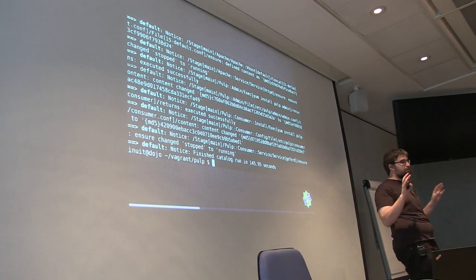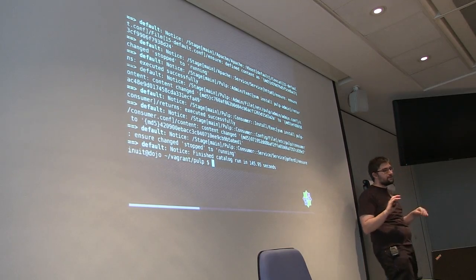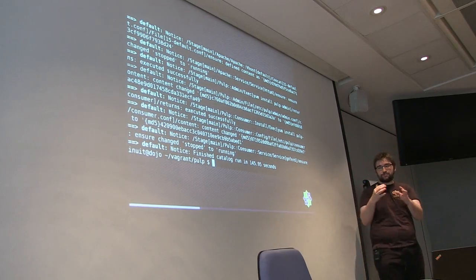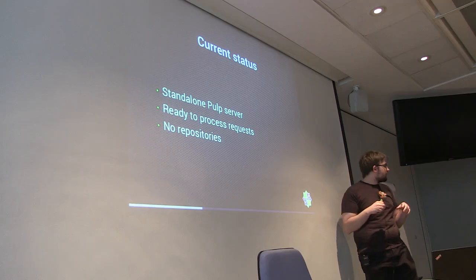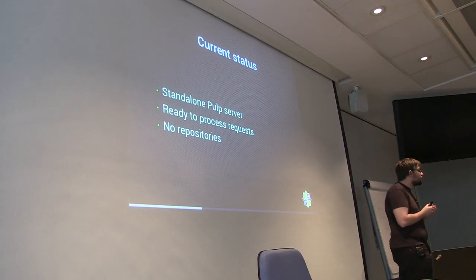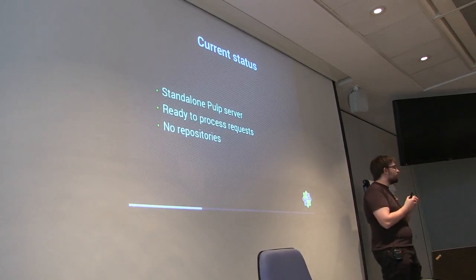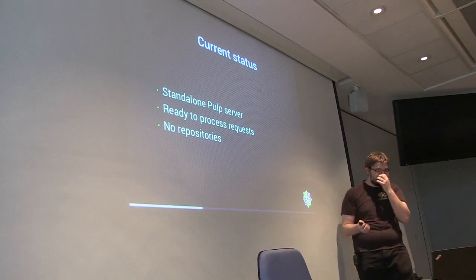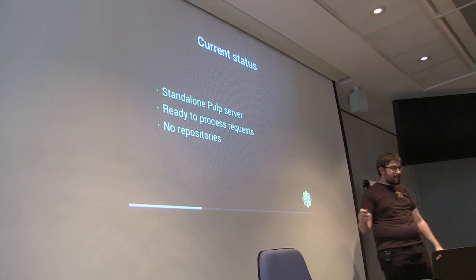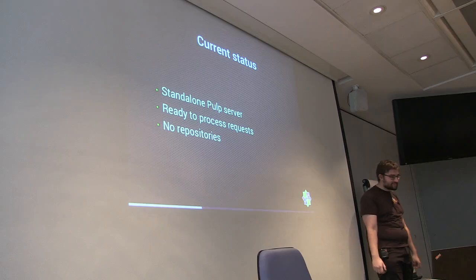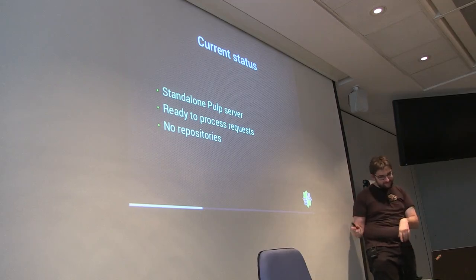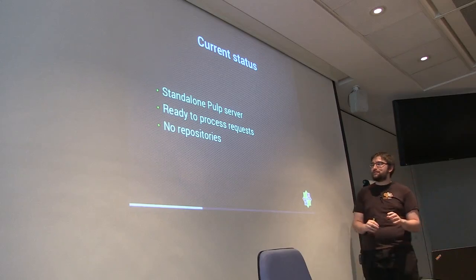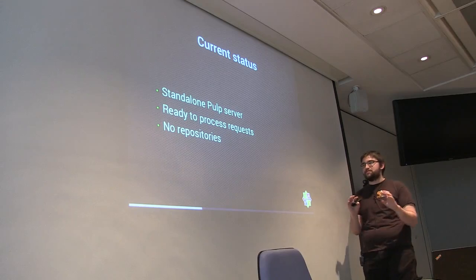If you want to set it up by hand, you have all the explanations in the Pulp manual, or you can write a Chef module if you want. A question comes up about Gopher D — it's used for the consumer daemon and this is a CentOS 7 box. So we have an empty Pulp server with no repositories, just a clean Pulp. The first step is to log in. The Pulp admin will log into the Pulp server and create a certificate stored on disk, available for about one week by default.